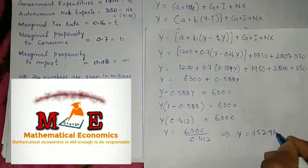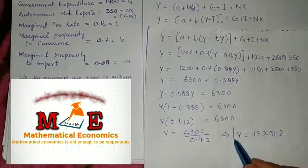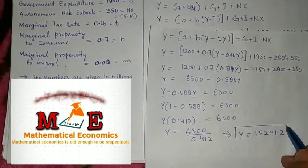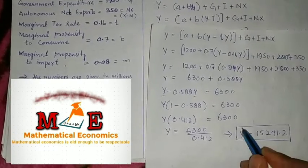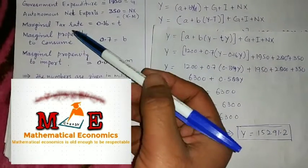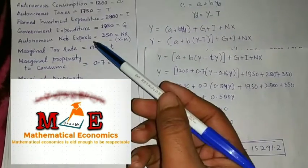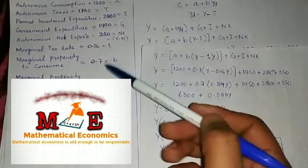Y equals approximately 15,291.2 million. Hence, this is the equilibrium level of national income when the data for our hypothetical economy are as given.